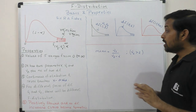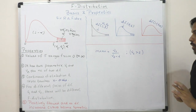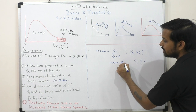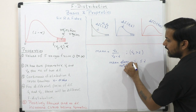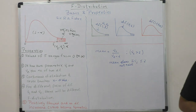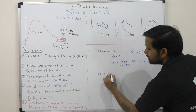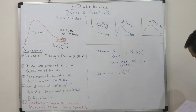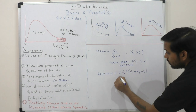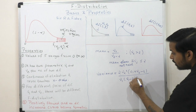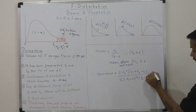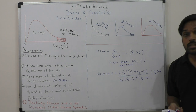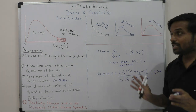The mean of the F distribution is ν2 divided by (ν2 minus 2), and this mean exists only when ν2 is greater than 2. If ν2 is less than or equal to 2, the mean does not exist. The variance formula is: 2ν2 squared times (ν1 plus ν2 minus 2), divided by ν1 times (ν2 minus 2) squared times (ν2 minus 4), and this variance exists only when ν2 is greater than 4.